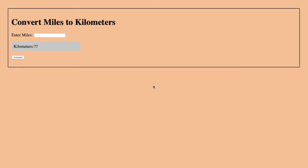We're going to make an HTML and JavaScript program that will receive a number of miles from a user and then convert that to kilometers. You can see the structure of the web page here. We've got a heading with the title, an entry blank where we're going to enter the number of miles. If we type in three miles and press the button, it should convert the miles to kilometers and the result will display in the gray area. And sure enough, three miles is 4.8280 kilometers.